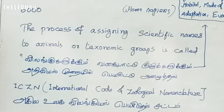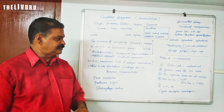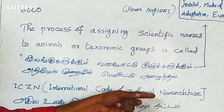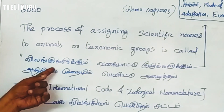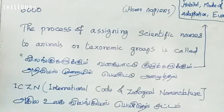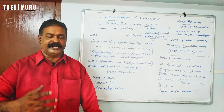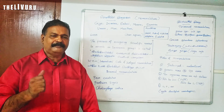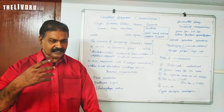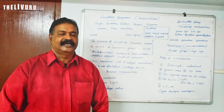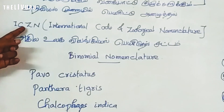Taxonomic group refers to species, phylum, order, class, or genus — these are groups of animals. There are certain rules and regulations governing this, set by the International Code of Zoological Nomenclature.